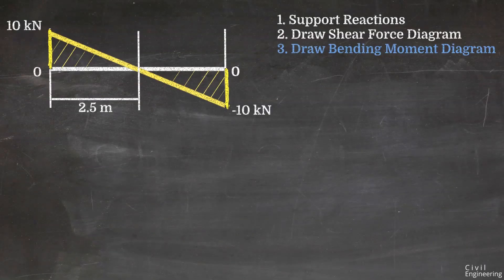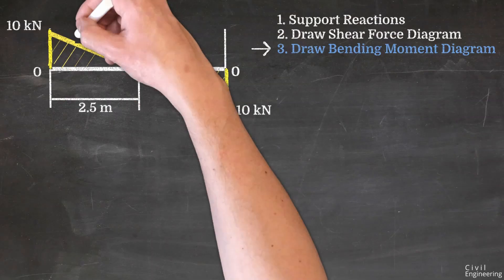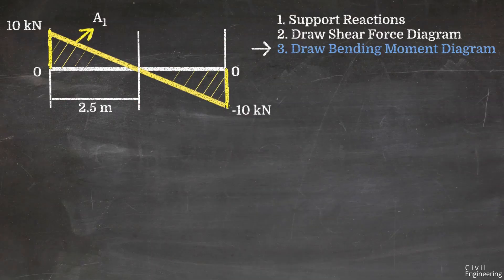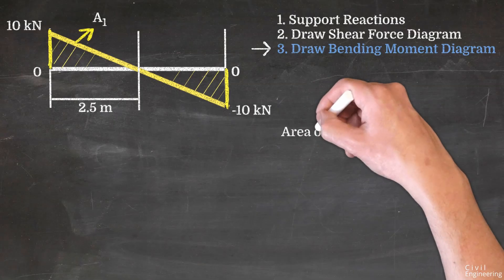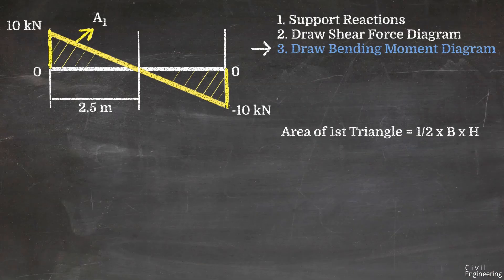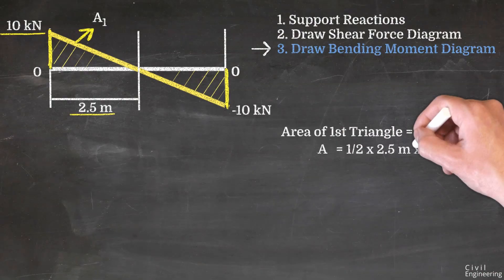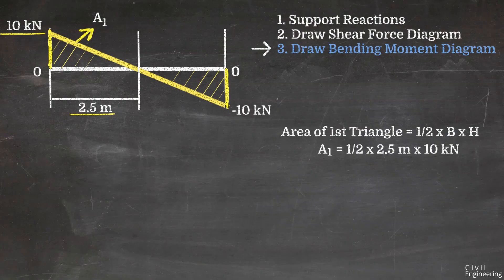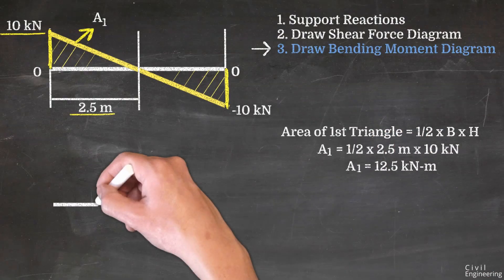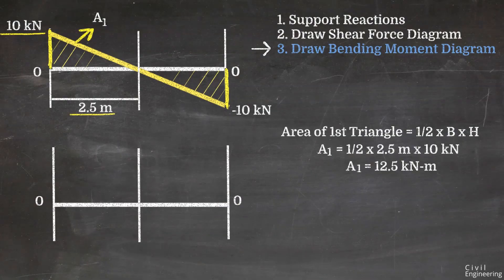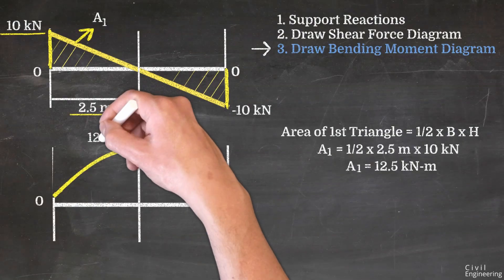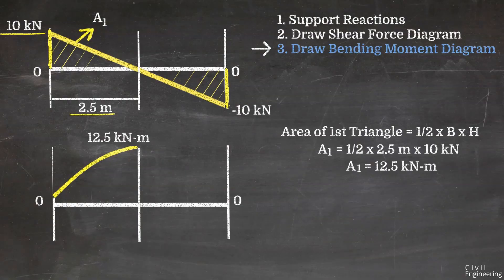For the bending moment diagram, we first find the area of the first triangle from the shear force diagram. Area A1 = ½ × base × height = ½ × 2.5 × 10 = 12.5 kNm. We draw the reference line and plot 12.5 kNm in the upward direction, as it corresponds to positive shear force and thus positive bending moment.